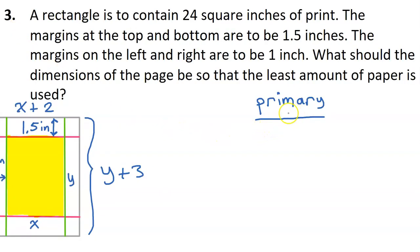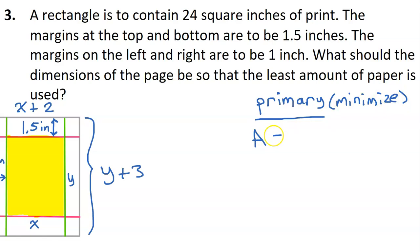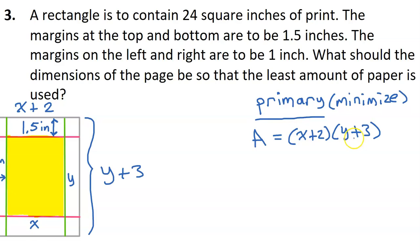We will have a primary equation and a secondary equation. The primary equation is the value we are trying to optimize. We are asked for the dimensions that use the least amount of paper, so we are talking about the area of the paper and we want to minimize it. The area of a rectangle is length times width, so in this case that will be (X + 2) times (Y + 3). But we need an expression with only one variable, not two.